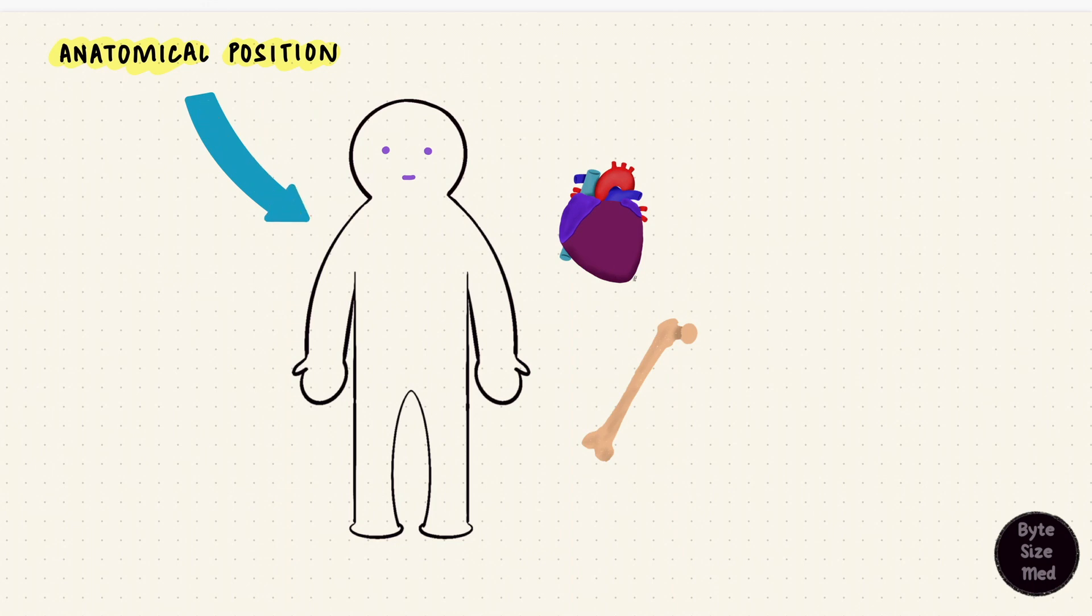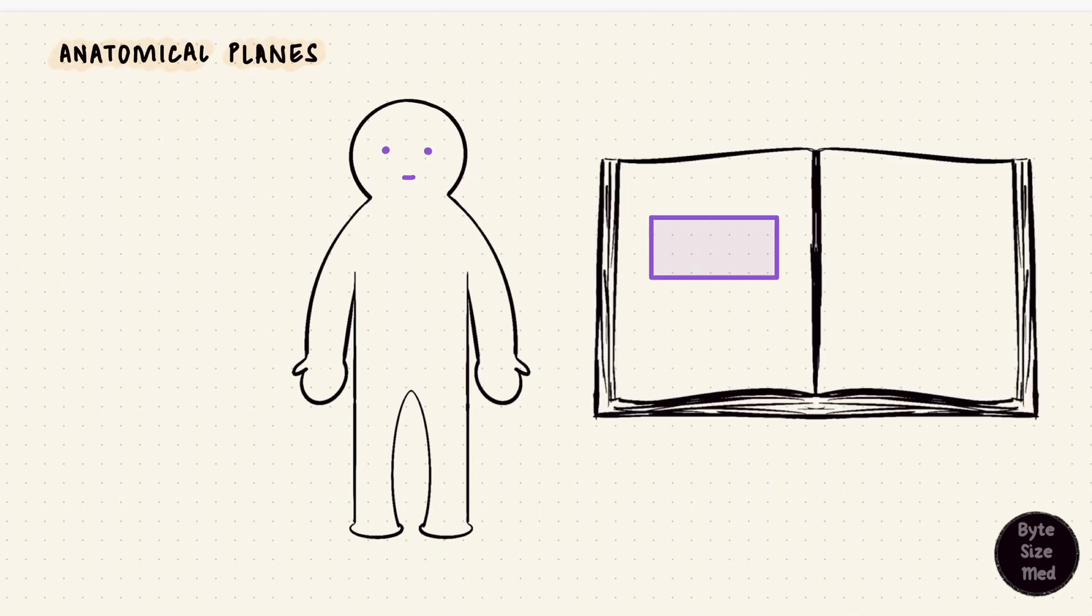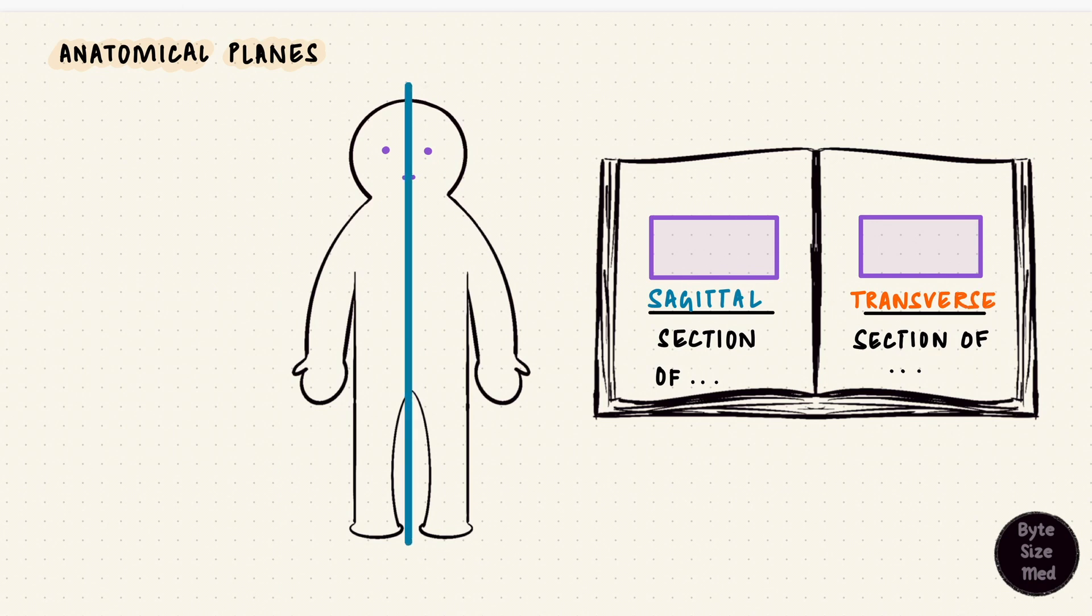The first thing we'll look at are the different planes. If you've looked at anatomy textbooks or atlases, there are pictures with the section mentioned under them, like sagittal, coronal, transverse sections. These are planes, they're the angle at which these sections are taken, and they're used in medical imaging as well.